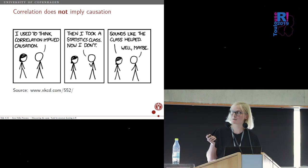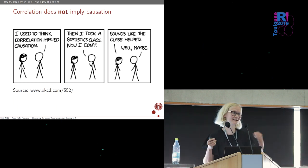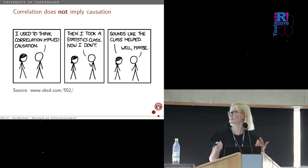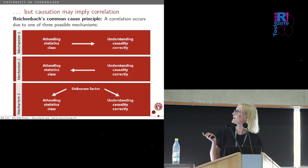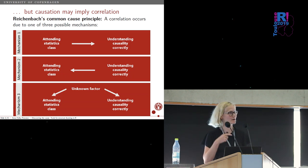I'm seeing some skeptical faces in the crowd here because this feels very controversial the first time you hear it. We've all been told a lot of times that correlation does not imply causation, and I'm not going to try to argue that it does. That is a true statement. I even brought this little comic to try to win you over. So we have this guy saying, I used to think correlation implied causation. Then he took a statistics class, so now he doesn't think so. But causation actually might imply correlation.